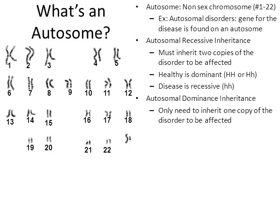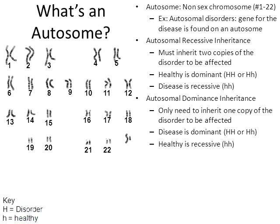Now let's move on to autosomal dominance. With autosomal dominant disorders, it's different — you only need to inherit one copy of the allele to suffer from the disease. The rules have flipped: the disease is dominant, so any capital H gives you the disease whether you're homozygous dominant or heterozygous. Therefore healthy is recessive. The pattern of autosomal dominance is essentially the reverse of autosomal recessive.